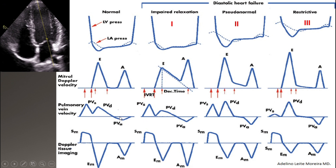The AR wave represents atrial contraction. As A increases, AR increases little by little and becomes taller. On tissue Doppler, at the early stage, E-prime is significantly reduced and decreases more than A-prime, so the E-prime to A-prime ratio becomes reversed. With progressing diastolic dysfunction, E-prime and A-prime may reverse, and both decrease in velocity.